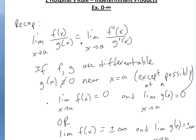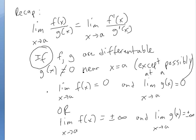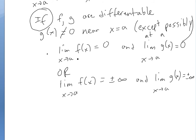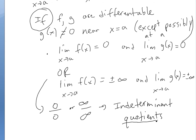To recap L'Hôpital's Rule: basically if you have a limit of f(x) divided by g(x), this equals the derivative of the top divided by the derivative of the bottom — f'(x) divided by g'(x) — if certain conditions are true: f and g must be differentiable, g(x) not equal to 0 near a, and the limit must equal either 0 over 0 or ±infinity over ±infinity. These are called indeterminate quotients.